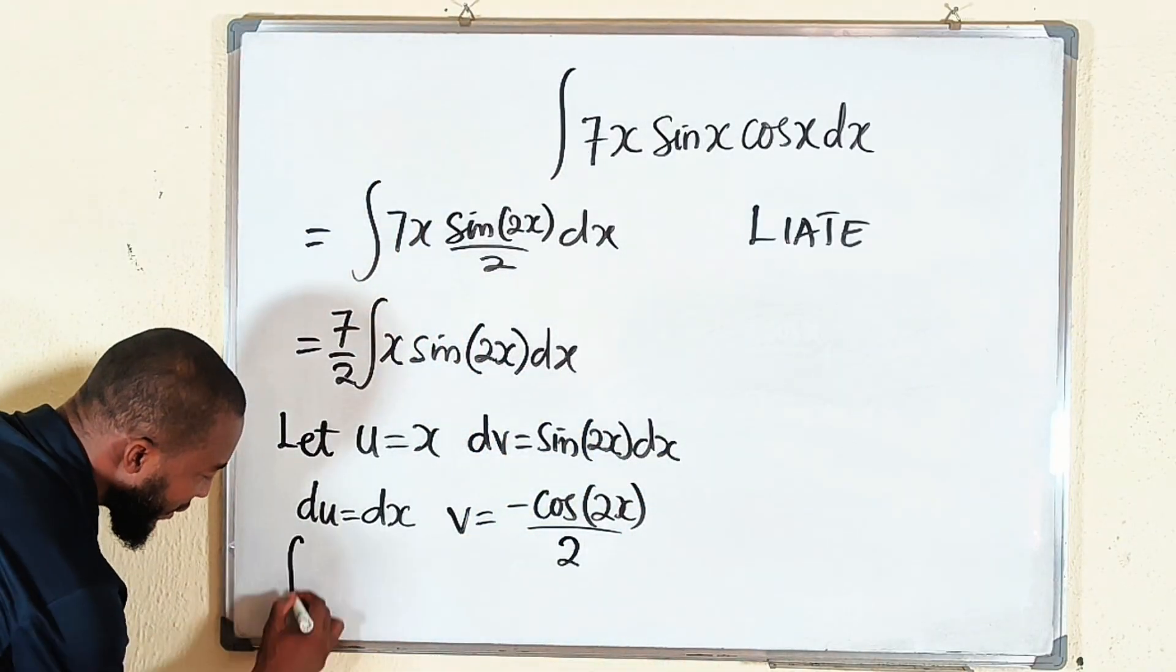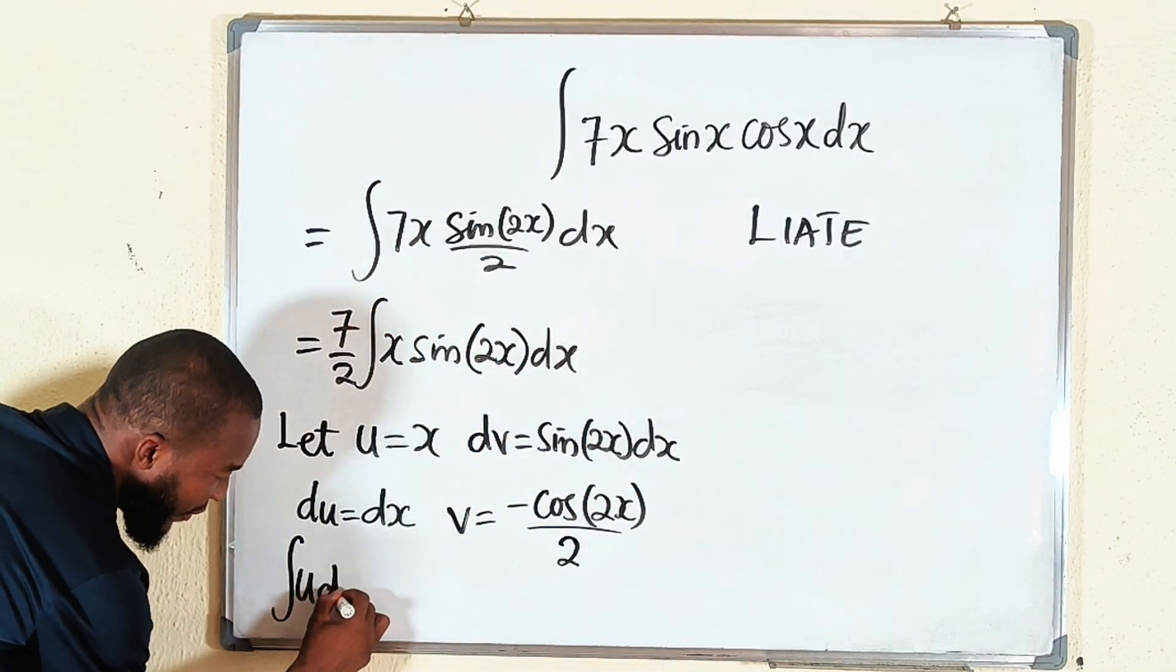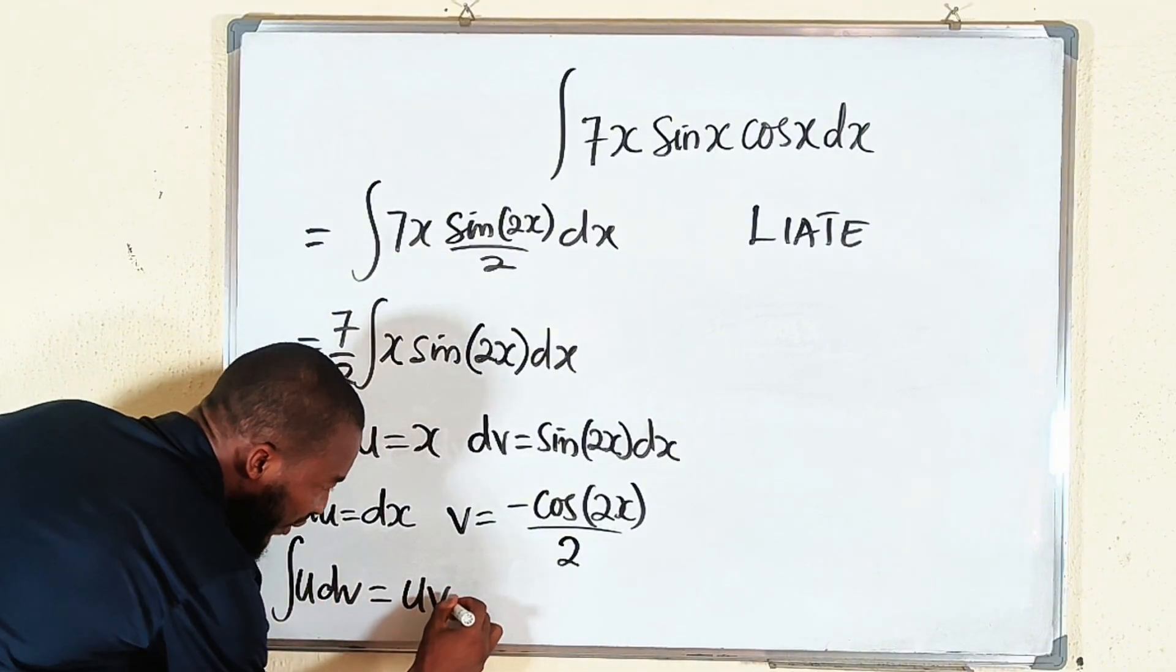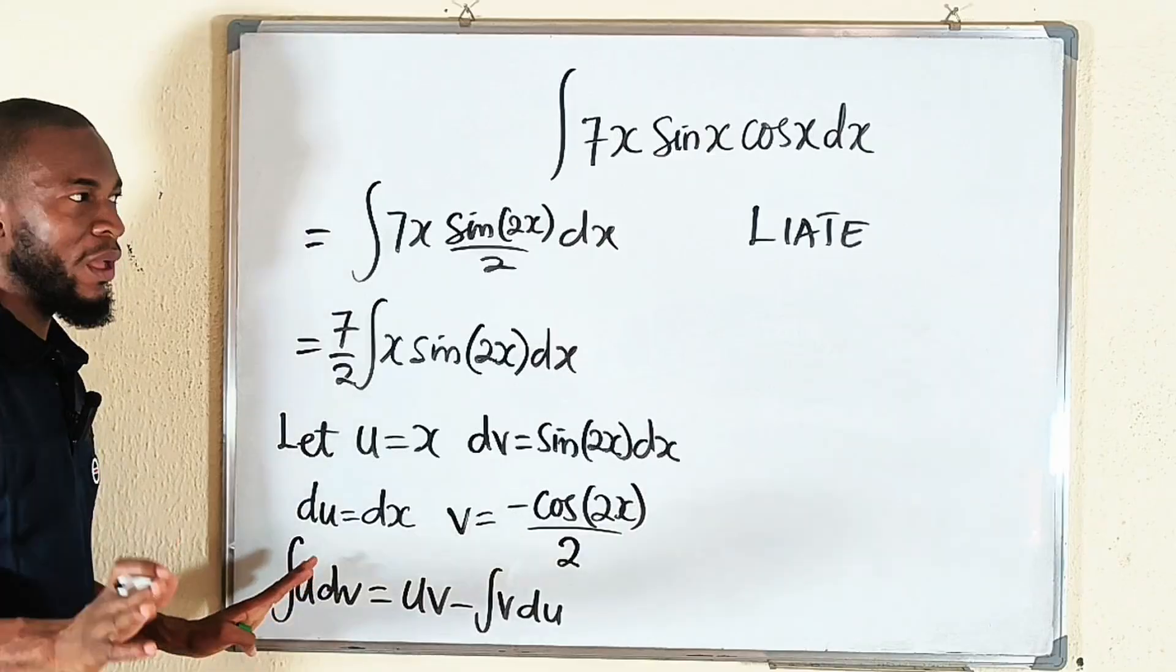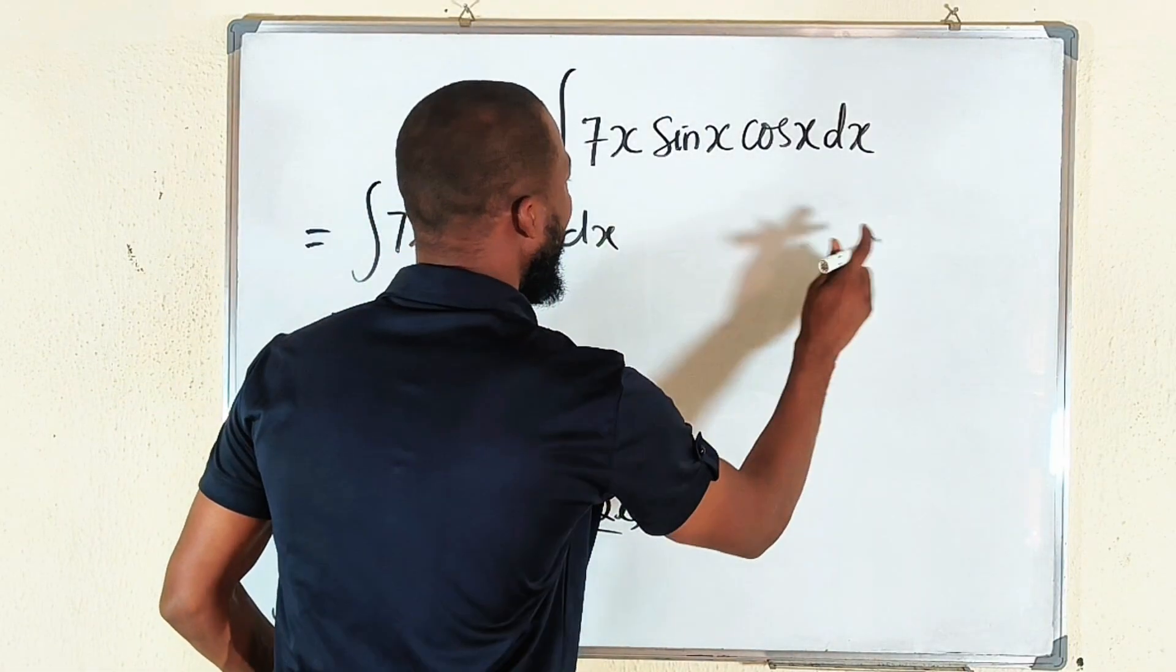So what is the formula? It stated that the integral of u dv is equal to u multiplied by v minus the integral of v du. As simple as that. Let's continue here.